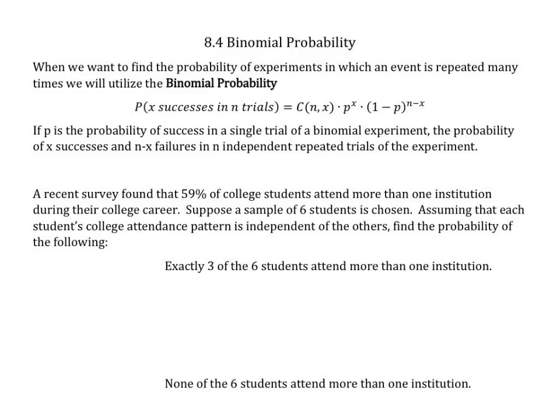Our formula is the combination of n choose x, times the probability to the power of x, times 1 minus the probability to the n minus x.